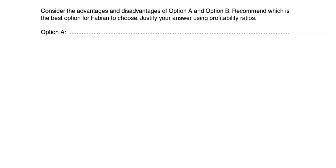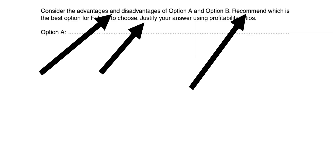Let's have a look at the instruction first of all. The key instruction word or command word is 'justify,' but the question also tells you to look at the advantages and disadvantages and to recommend. So it gives you a lot of instructions. When we justify we know that needs to be done towards the end of the answer, and before we're able to do this we need a balanced argument — looking at the advantages and disadvantages before making a recommendation.